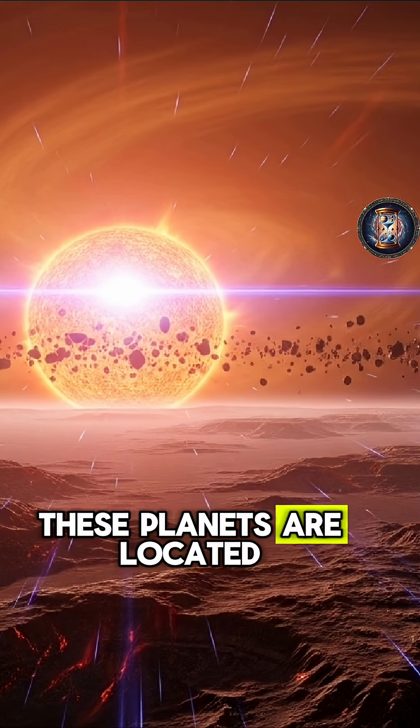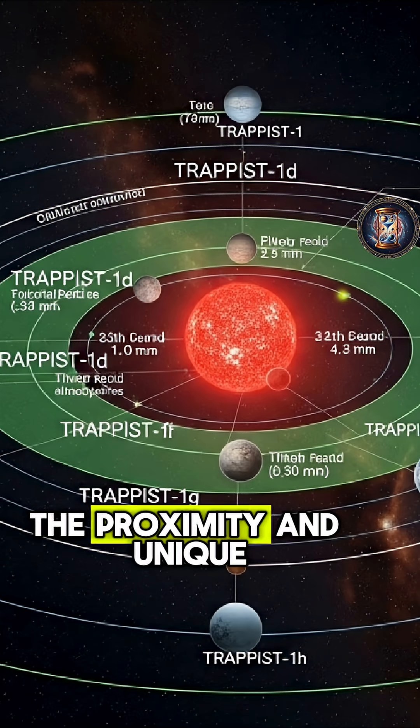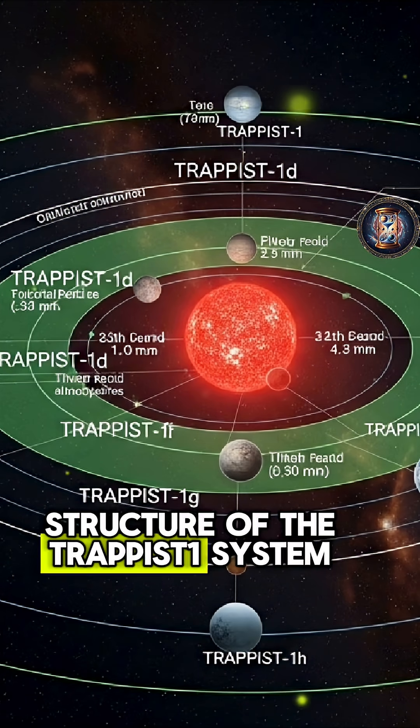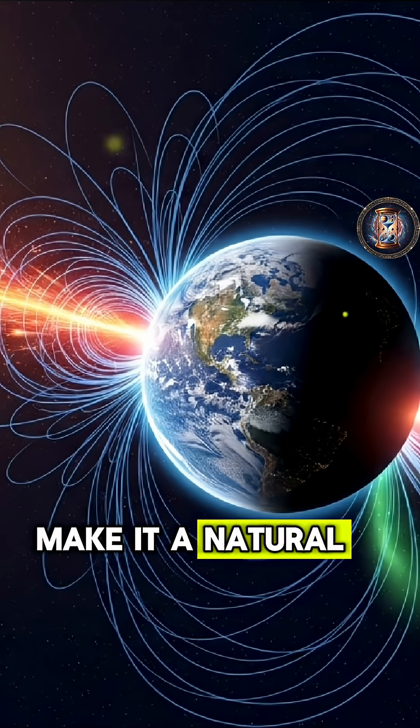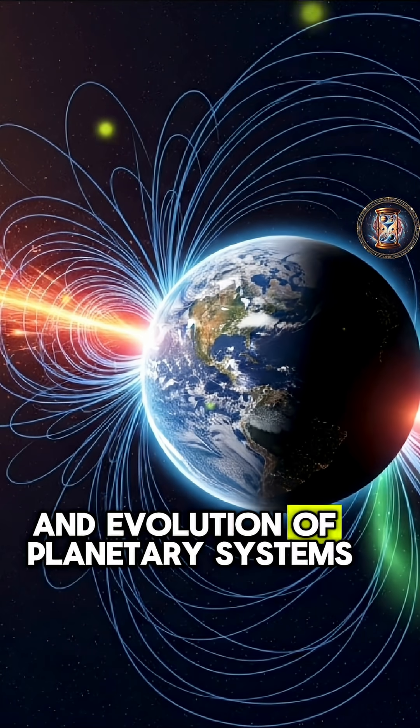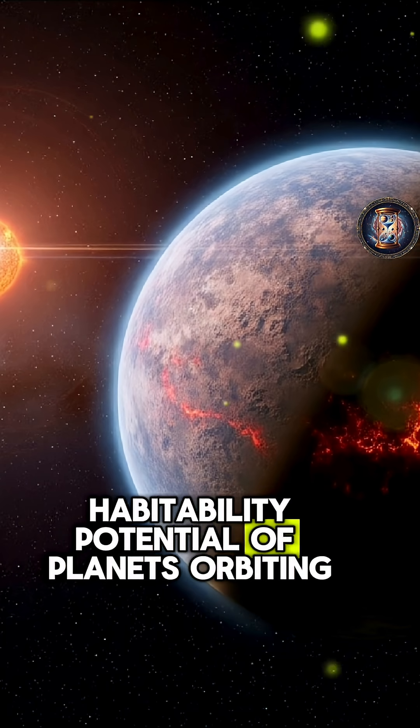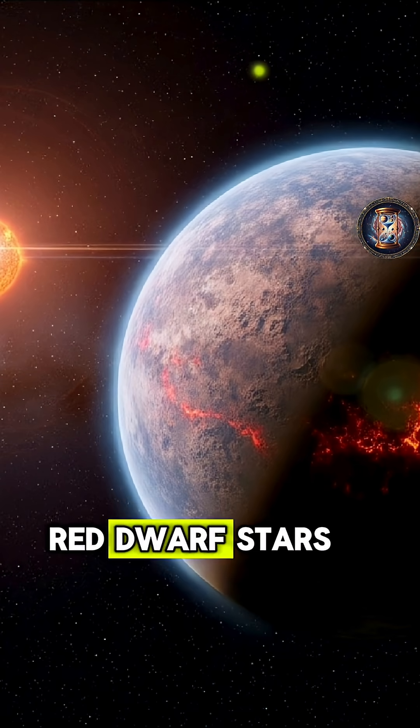Three or four of these planets are located within the habitable zone. The proximity and unique structure of the TRAPPIST-1 system make it a natural laboratory for studying the formation and evolution of planetary systems, as well as the habitability potential of planets orbiting red dwarf stars.